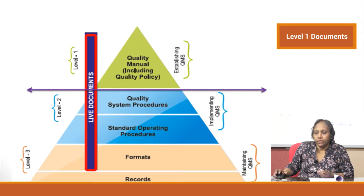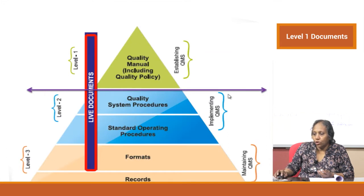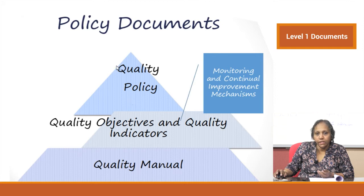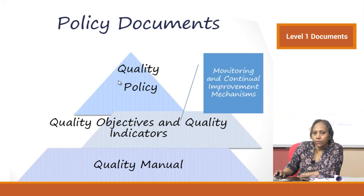Let us see the pyramid again. These are the documents we are going to talk about in this video. Taking the apex documents, I have divided it into three layers for your understanding — it is not the final standard for dividing documentation. At the apex is the quality policy; in the second layer are the quality objectives, quality indicators, and the quality manual, all used for planning.